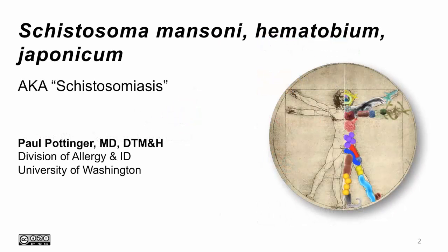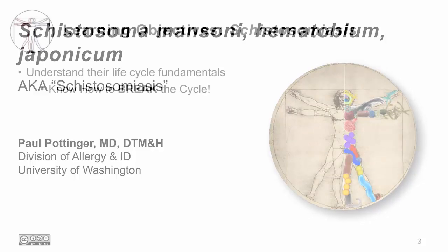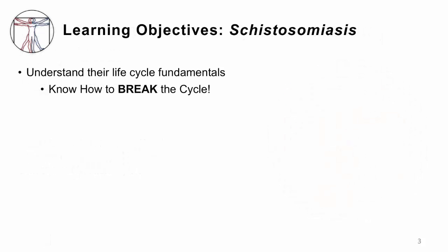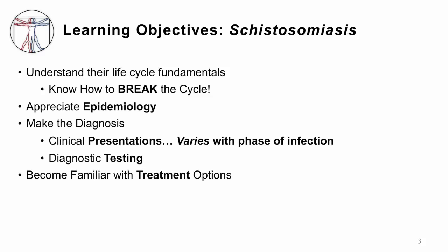This lecture will cover Schistosoma Mansoni, Hematobium, and Japonicum, the fluke trematodes of schistosomiasis. I'm Dr. Paul Pottinger. The goals for this lecture on schisto are to understand how it happens so you can break that life cycle, know who gets the infection, and recognize the clinical presentation.